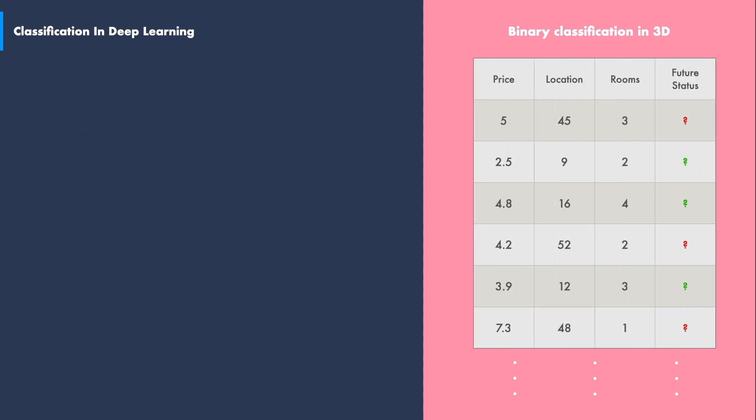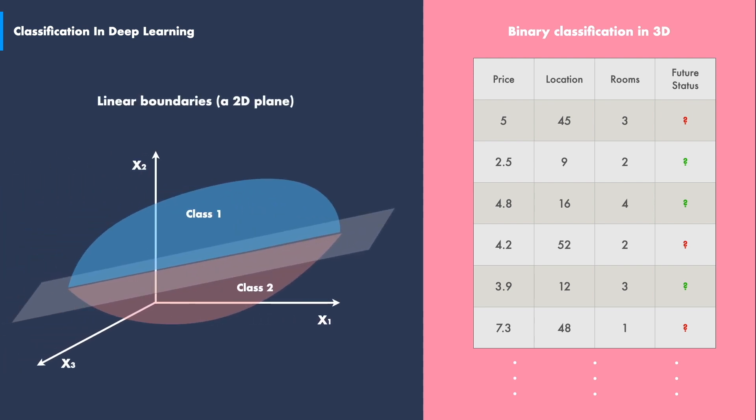However, we can have more than two inputs, for example, we could have had the number of rooms as an additional input to the price and location of each house. In this case, the data are represented as 3D shapes. In the case of the housing market example, the three-axis of the graph will represent the price, the location, and the number of rooms. The separation between the two classes in the data is no longer a straight line, but rather a 2D plane.